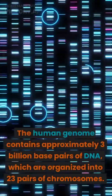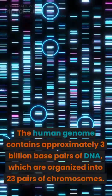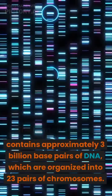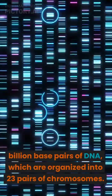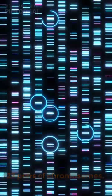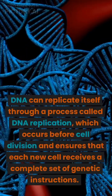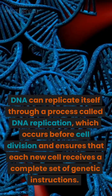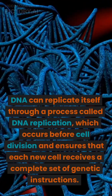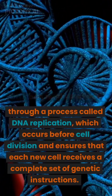The human genome contains approximately 3 billion base pairs of DNA, which are organized into 23 pairs of chromosomes. DNA can replicate itself through a process called DNA replication, which occurs before cell division.